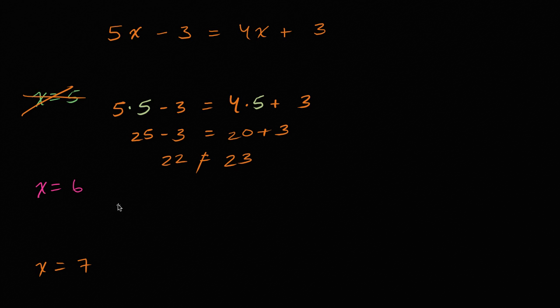Now let's try x equals six. So once again, we're going to do five times our x, which is going to be six. Minus three needs to be equal to four times our x plus three. And in this case, our x is six. So it's going to be five times six minus three needs to be equal to four times six plus three. What's five times six? That's thirty.